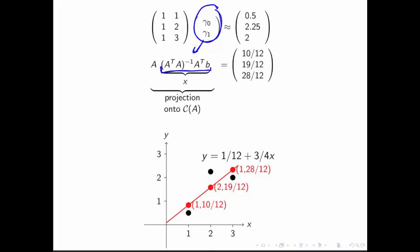If we then say, but what was that point that was closest to B that was in the column space? That's a matter of taking that solution vector and multiplying it by the matrix A, because then you take the linear combinations of the columns of A that gives you the right-hand side that then is in the column space and is closest to the original point to which the right-hand side vector B pointed.